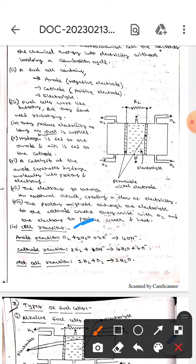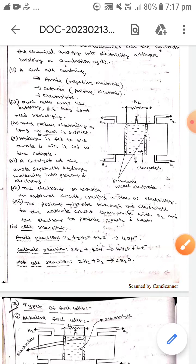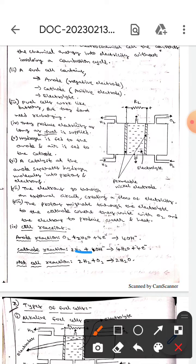The cell reactions: at the anode, O2 plus 2H2O plus 4 electrons gives rise to 4OH minus. The cathode reactions are 2H2 plus 4OH minus gives rise to 4H2O plus 4 electrons.